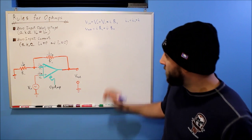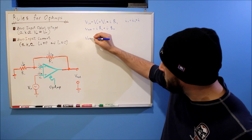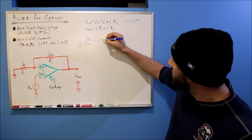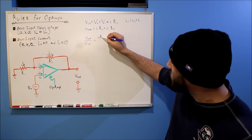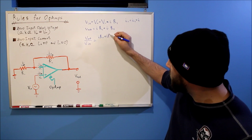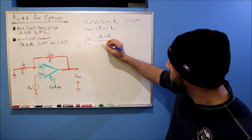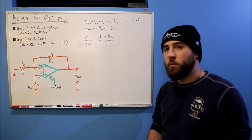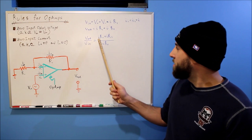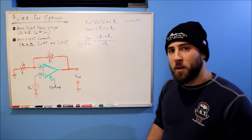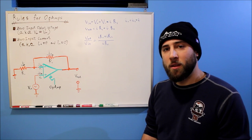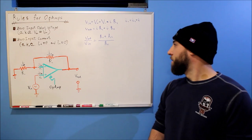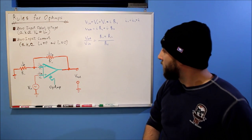Now, a transfer function for this would be V out over V in. And we could just plug in these equations. So V out is IR1 plus IR2 over our V in, which is IR1. Now, looky there. There's an I in every single term on both the top and the bottom, which means that they all cancel out. So we can get rid of all the I's. There we go.